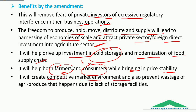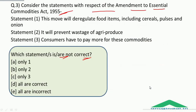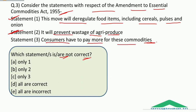It will create a competitive market environment and prevent wastage of agri produce due to lack of storage facilities. Moving to the question: statement 1 — this move will deregulate food items including cereals, pulses and onion — is correct. Statement 2 — it will prevent wastage of agri produce — is correct. Statement 3 — consumers have to pay more for these commodities — is incorrect. Therefore the correct answer is Option C, only statement 3.